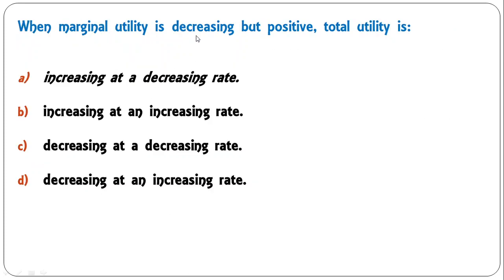Next: 'When marginal utility is decreasing but positive, total utility is' — increasing at an increasing rate; increasing at a decreasing rate; decreasing at a decreasing rate; or decreasing at an increasing rate? The correct answer is B: when marginal utility is decreasing but positive, total utility will be increasing at a decreasing rate.